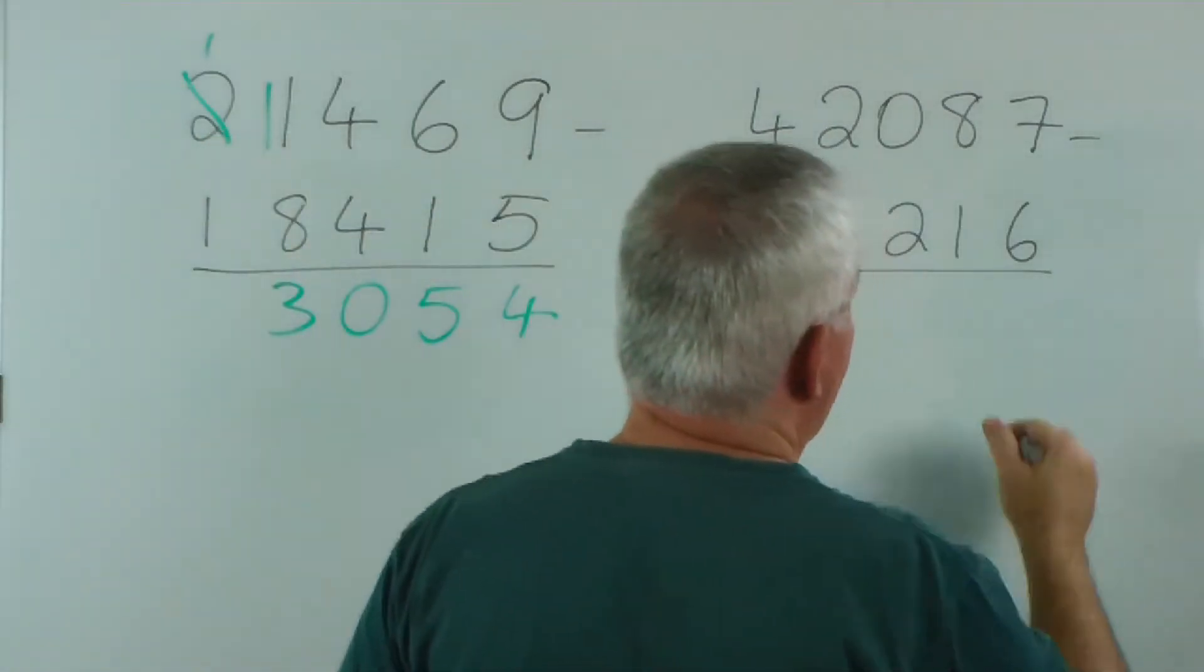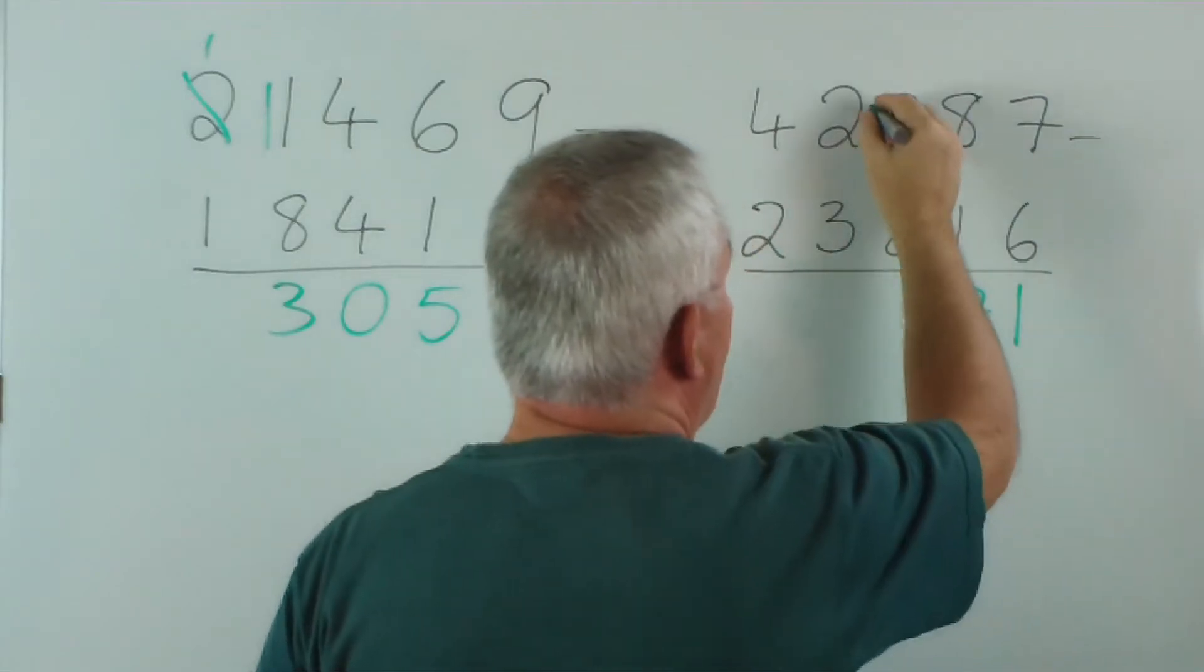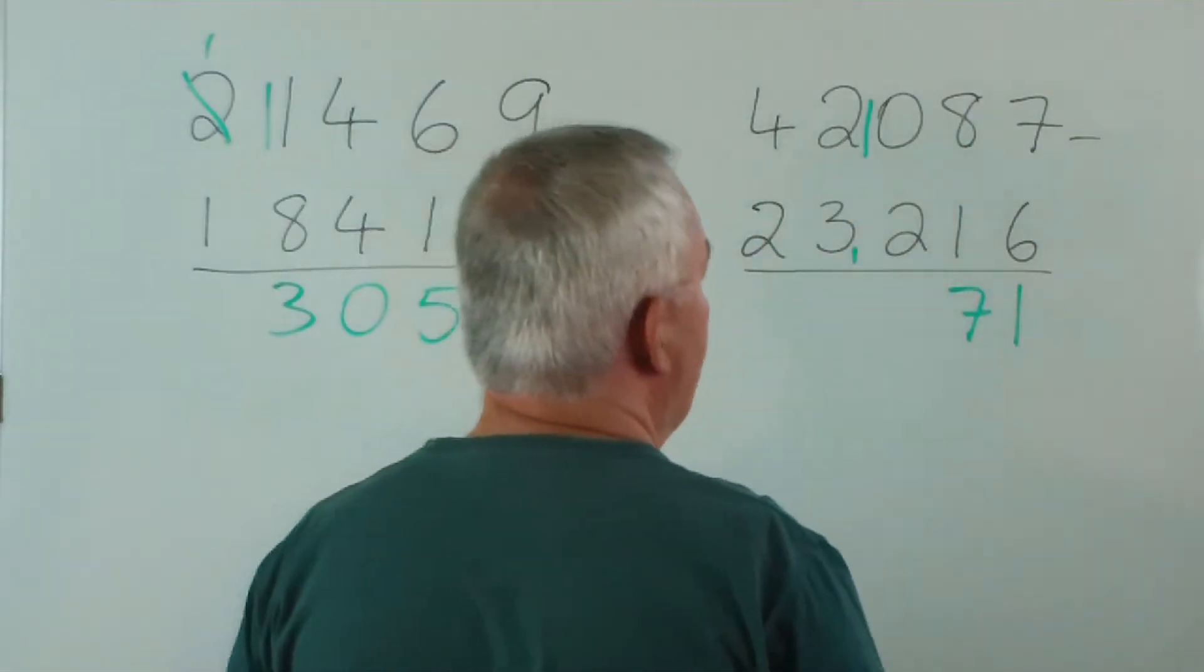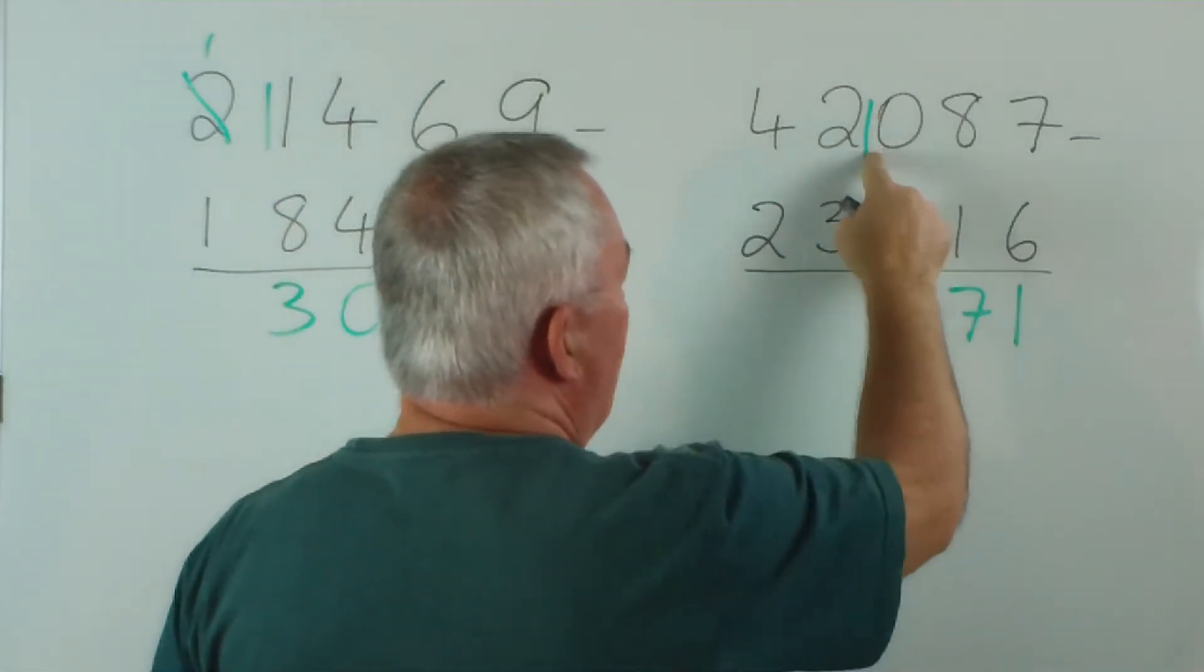This one we'll use borrowing. 6 from 7 is 1. 1 from 8 is 7. 2 from 0 we can't do, so we... did I say borrow? This is carrying, this method. 1 up and 1 down.